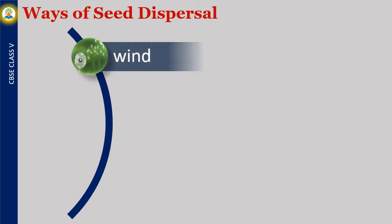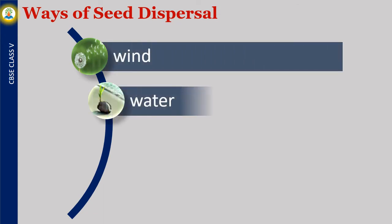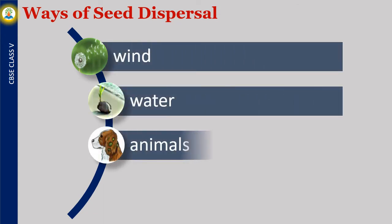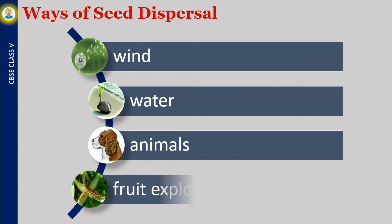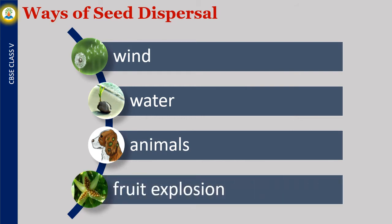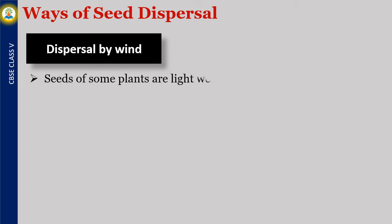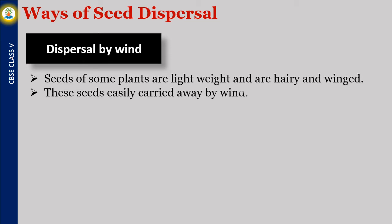Ways of Seed Dispersal: dispersal by wind, dispersal by water, dispersal by animals, and dispersal by fruit explosion. Let us learn in detail the ways of seed dispersal one by one. Seeds of some plants are lightweight and are hairy and winged. These seeds are easily carried away by wind. Examples are dandelion, cotton, and madar.